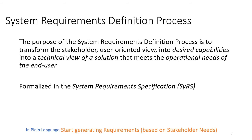The System Requirements Definition Process, as defined in the System Engineering Handbook, has the purpose to transform the stakeholder user-oriented view — the result of the previous Stakeholder Needs and Requirements Definition Process — into desired capabilities and a technical view of a solution that meets the operational needs of the end user. We take all information gathered from stakeholders and convert it into a holistic description of the intention, behavior, function, and architecture of the system. All of that is formalized in a System Requirements Specification.